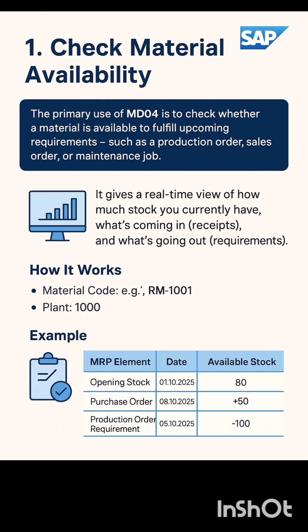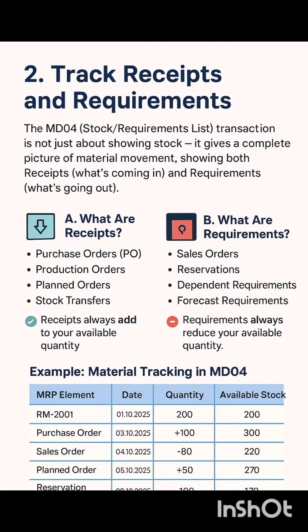Now we will explore how MD04 Stock Requirement List helps track receipts and requirements in SAP. In MD04 you can instantly see what's coming in and what's going out for any material. Purchase orders and production orders are receipts that increase stock, while sales orders and reservations are requirements that reduce stock. This live view shows how your stock levels will change over time, helping you plan purchases, avoid shortages, and ensure on-time production.